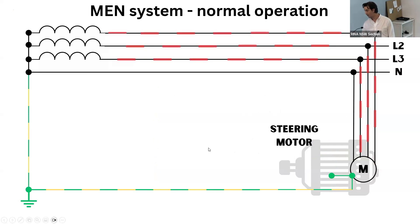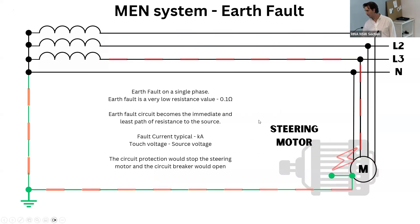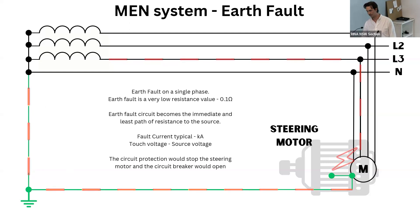Moving on to the MEN system — it would look something like this, with current flowing. Sometimes there might be current on the neutral depending on the type of motor. If you have an Earth fault, you're going to have a very large current flowing through your Earth back to your source. The circuit breaker would open and your plant is going to stop. You're going to have a very large fault current in the kilo-amps — and that's the main difference.